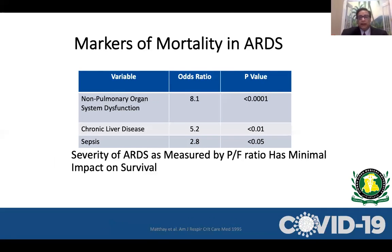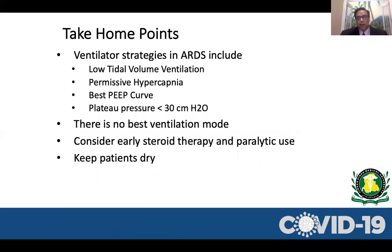Regarding mortality in ARDS: if someone has only pulmonary organ involvement, their ARDS mortality is lower. But if ARDS is caused by an extrapulmonary source like sepsis, the chance of dying from ARDS is higher — odds ratio 2.8. If there is non-pulmonary organ dysfunction like necrotizing fasciitis, abdominal compartment syndrome, or severe pancreatitis, the mortality is very high.